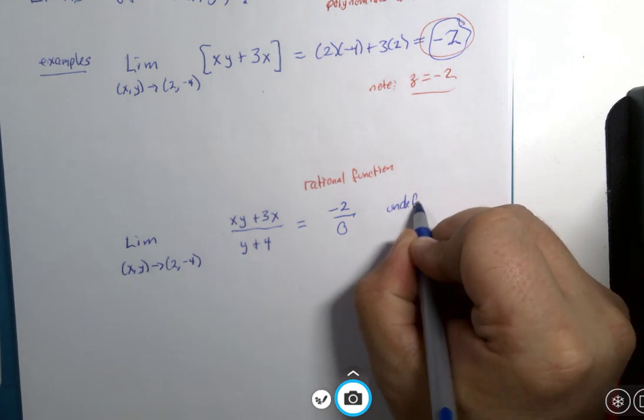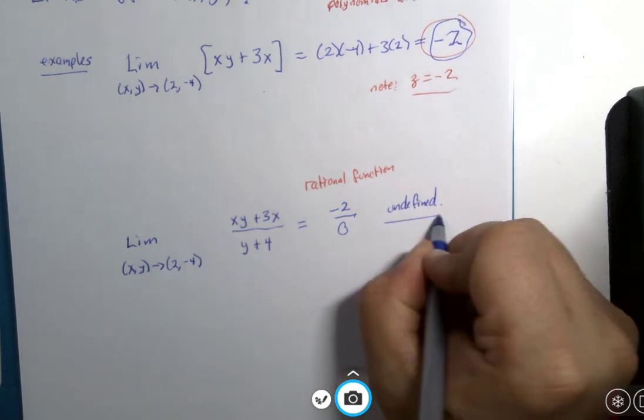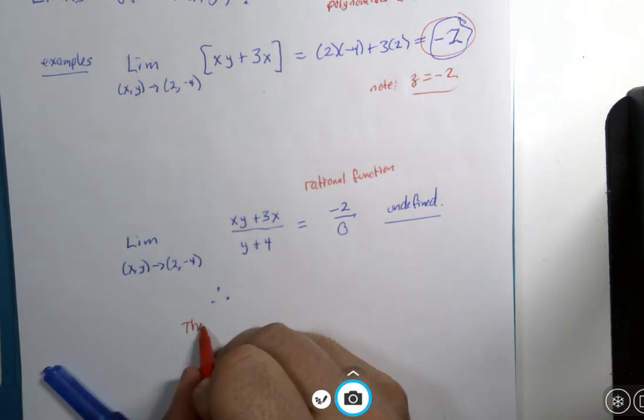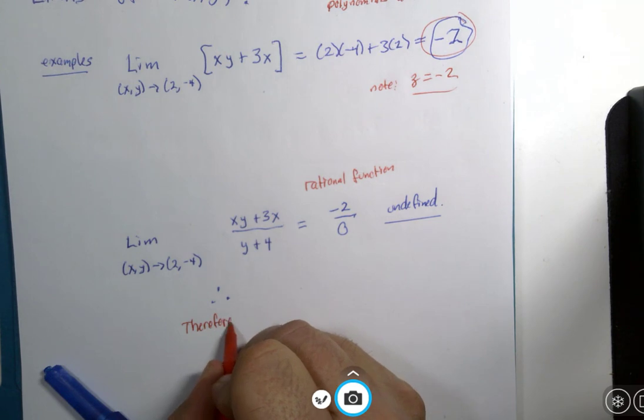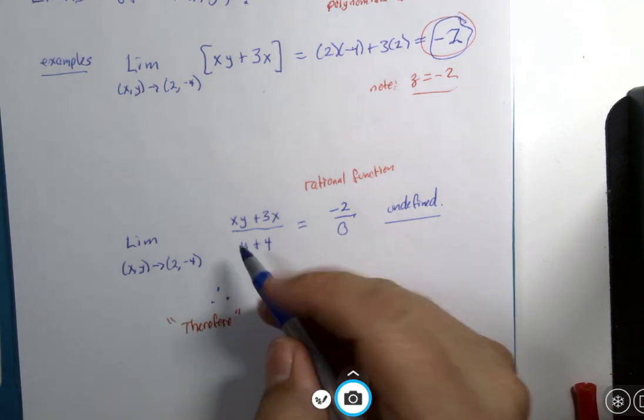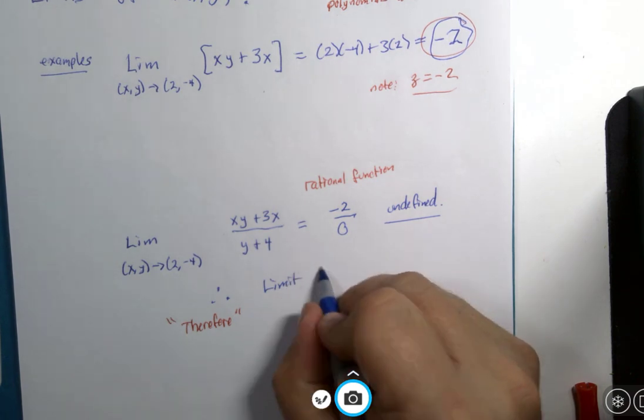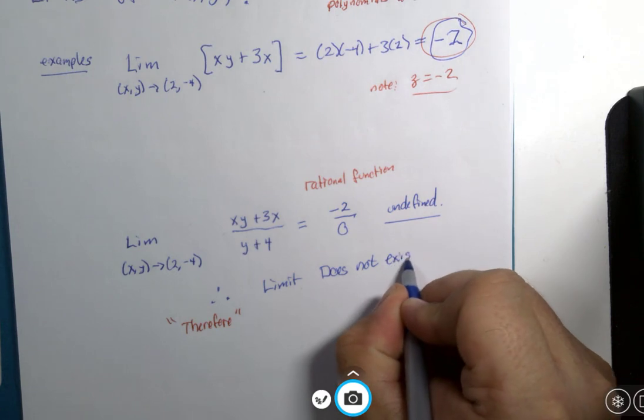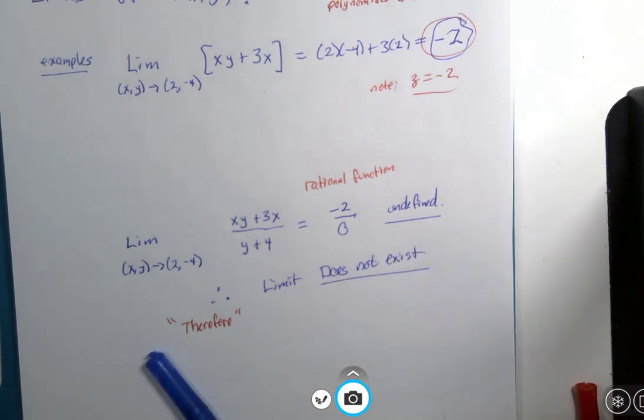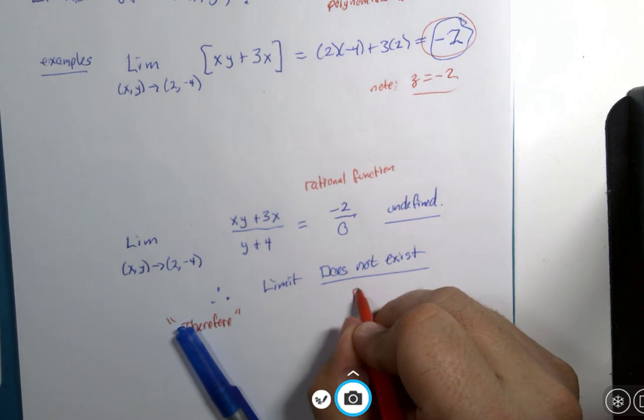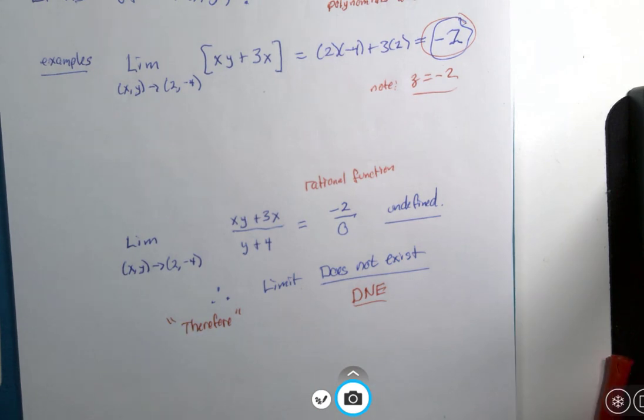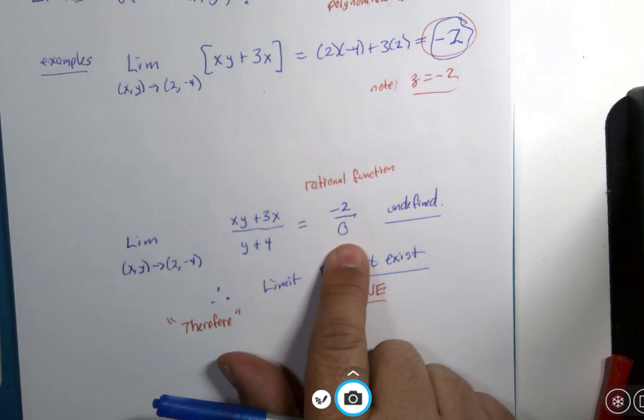This is undefined. You guys know the three dots? Therefore, this limit does not exist. Sometimes this is abbreviated as capital D, capital N, capital E in the English language: does not exist. So that's still a fact.